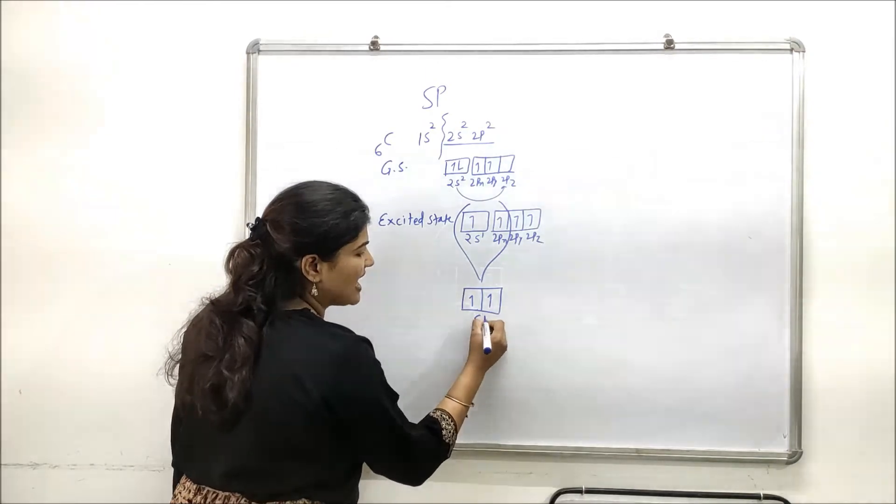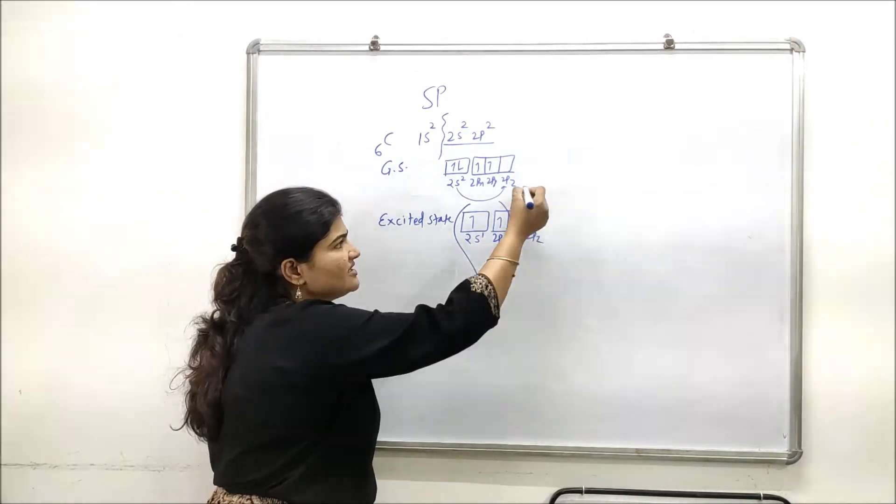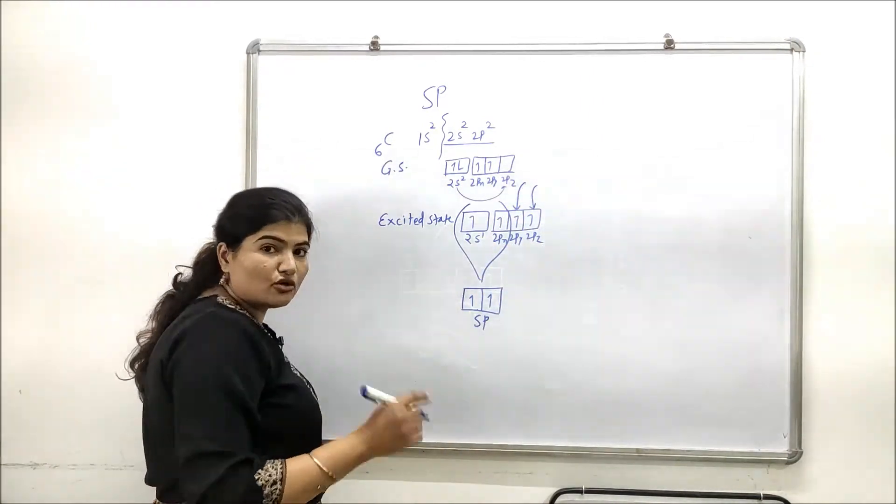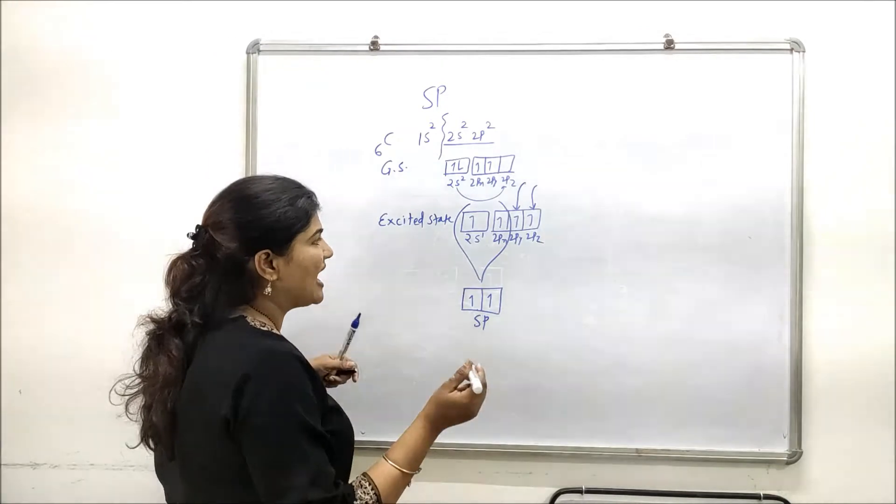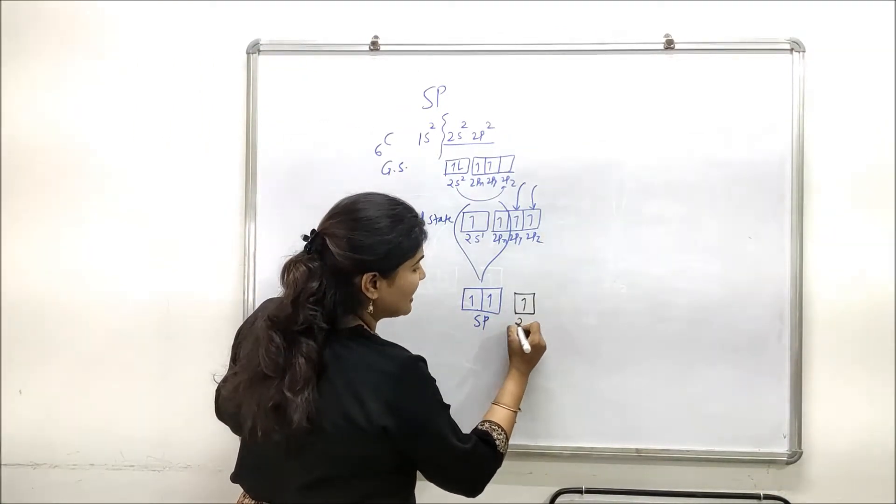As these two are mixed, you can see these two remain unhybridized. We cannot forget them; we have to take them together. So there will be one unhybridized 2py and one unhybridized 2pz orbital with sp hybridized carbon.